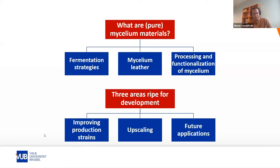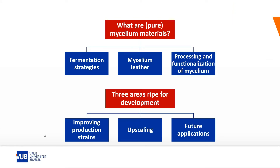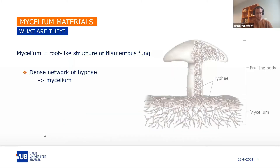In the second part, I will go over three areas for development: first, improving the production strains; second, upscaling the production; and lastly, I will talk about a couple of future applications. So let's start with introducing the organism.